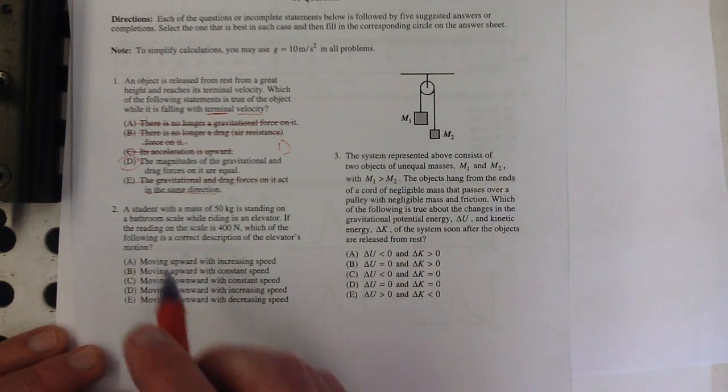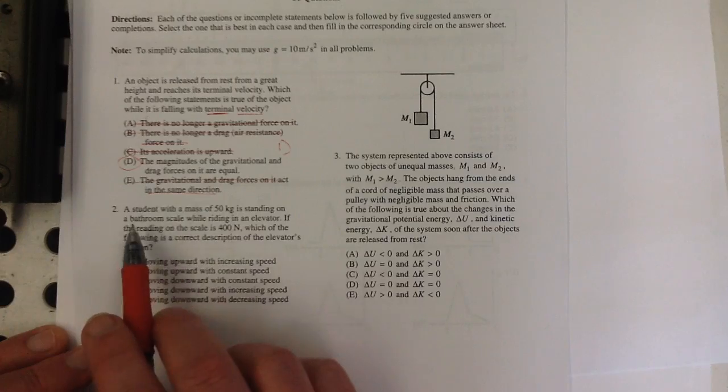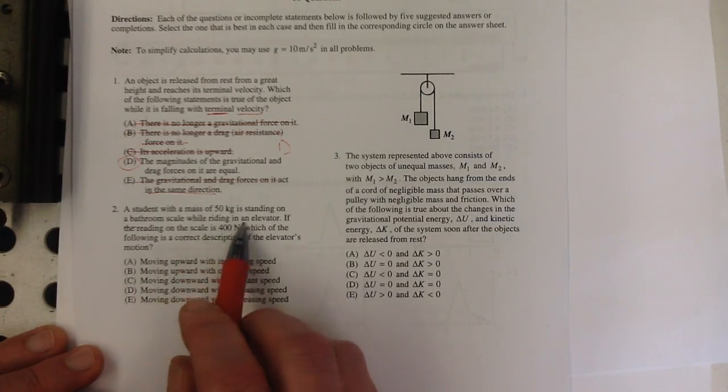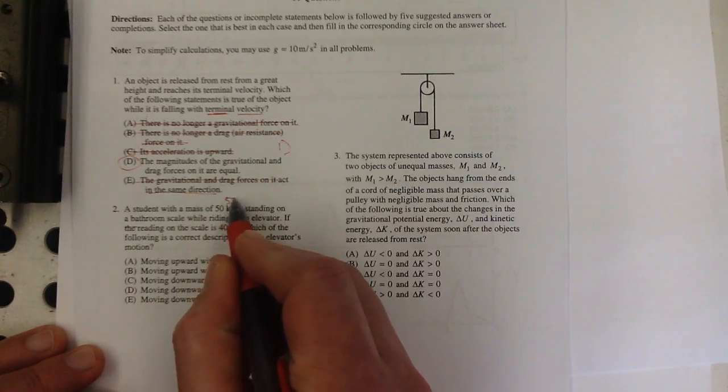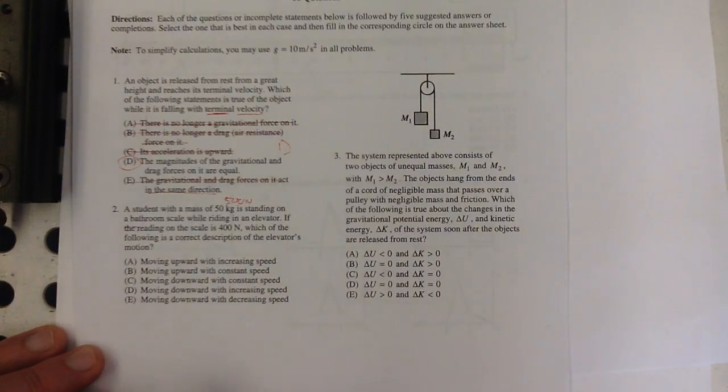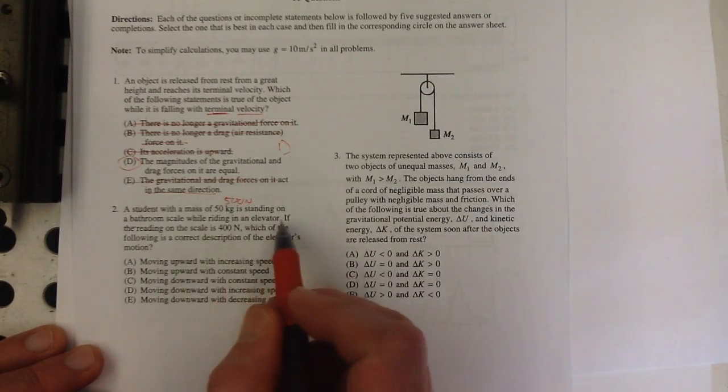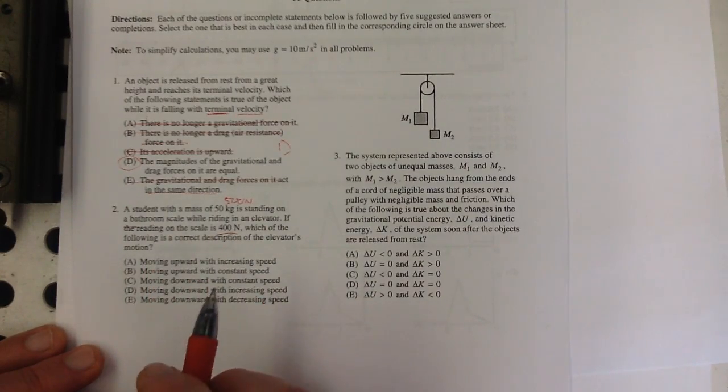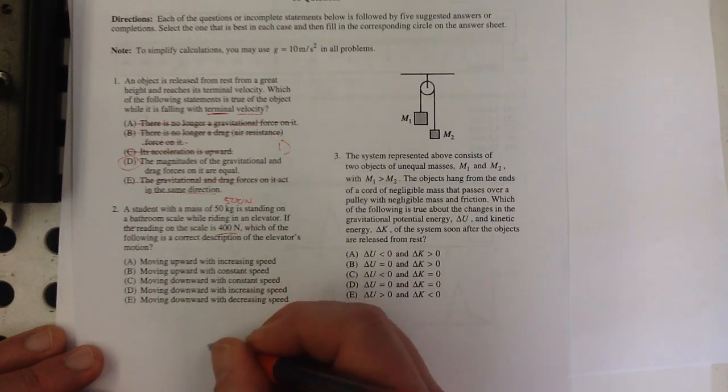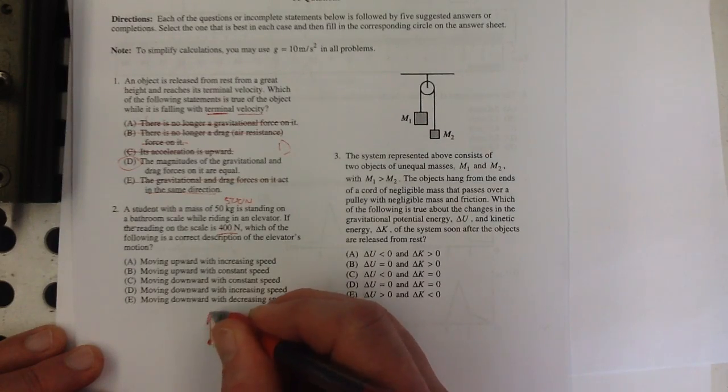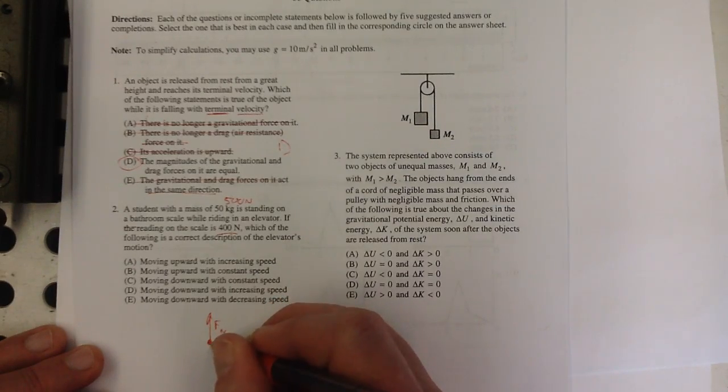Number two. A student with a mass of 50 kilograms is standing on a bathroom scale while riding the elevator. 50 kilograms could be a gravitational force of about 500 newtons. It's using 10. And the reading on the scale that they're standing on is 400 newtons. So they seem to weigh less. So that would mean that the normal force on them from the scale is less than the force of gravity.